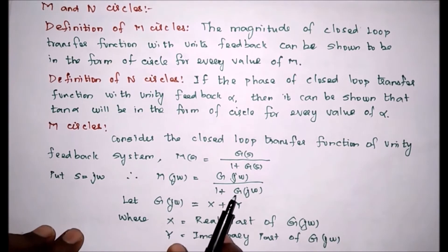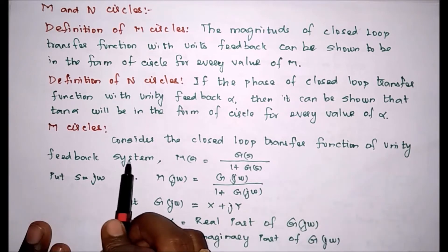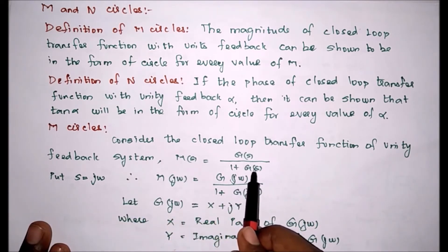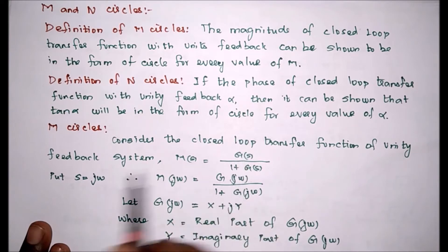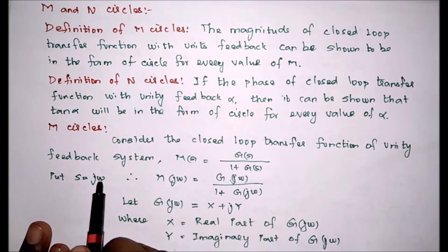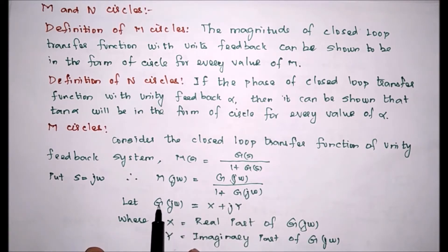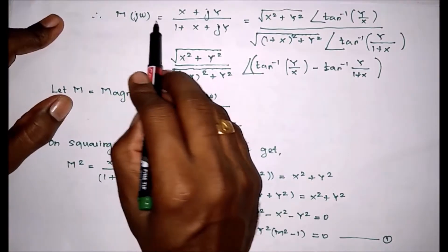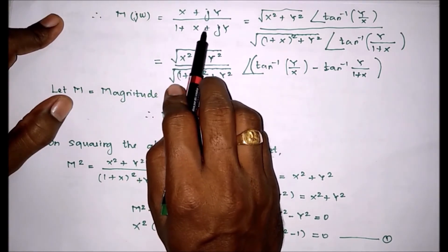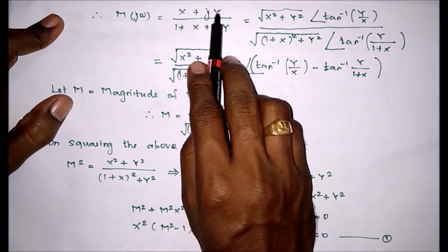To discuss about the M circle, we consider the closed loop transfer function of a unity feedback system: M of S equal to G of S divided by 1 plus G of S, where H of S equal to 1. To convert this into the sinusoidal transfer function, we substitute S equal to J omega. Therefore, M of J omega equal to G of J omega divided by 1 plus G of J omega. Since G of J omega is in complex form, we consider it as x plus jy, where x is the real part and y is the imaginary part.